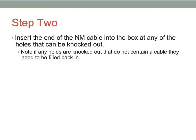For Step 2, you're just going to insert the NM cable into the box at any of the holes that can be knocked out. This will be covered in the demonstration with Mr. Morse. Note: if any of the holes are knocked out but do not contain a cable, they need to be filled back in, or we're going to have to eventually replace the box. Our boxes will be reused — there will be blue boxes in each corner with holes already in them, but you should get some new boxes from underneath the stairwell in the shop.